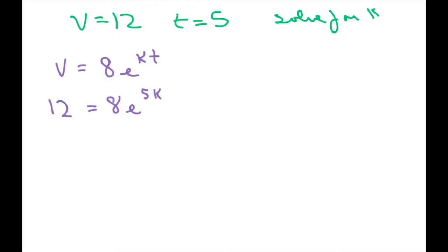And now divide both sides by 8. So that's 12 over 8, which is 3 over 2 equals e to the 5k power. And so now we have to solve for k.